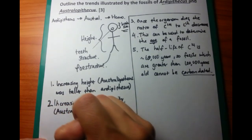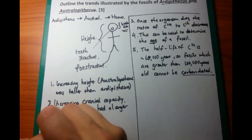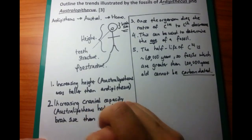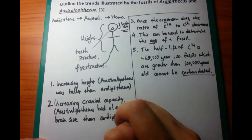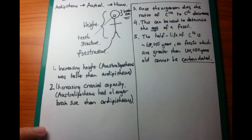Australopithecus had a larger brain size in comparison to Ardipithecus. It's just like people are getting smarter and smarter. So if you compare Homo sapiens with Australopithecus, or the current modern day human, compared to a primitive humanoid, then you will have an increasing cranial size once again.